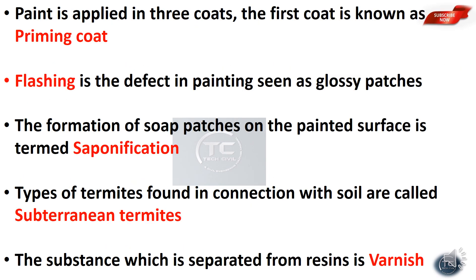Paint is applied in three coats. The first coat is the priming coat. There is a first coat, second coat, and third coat. The first coat is the priming coat, and the final coat is the top coat.